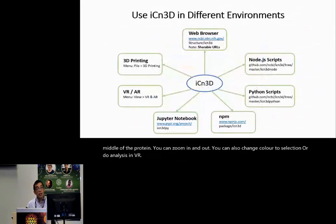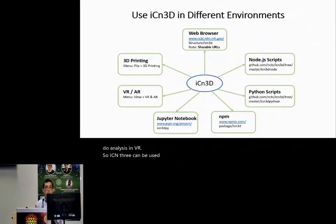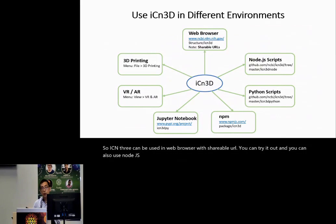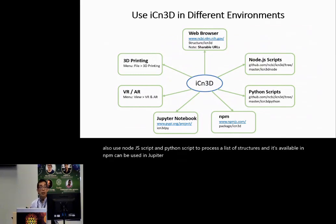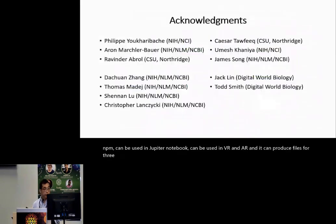ICN3D can be used in a web browser with a shareable URL. You can also use Node.js scripts and Python scripts to process a list of structures. It is available on NPM, can be used in Jupyter Notebook, in VR and AR, and it can produce files for 3D printing as well. Thank you for your attention.